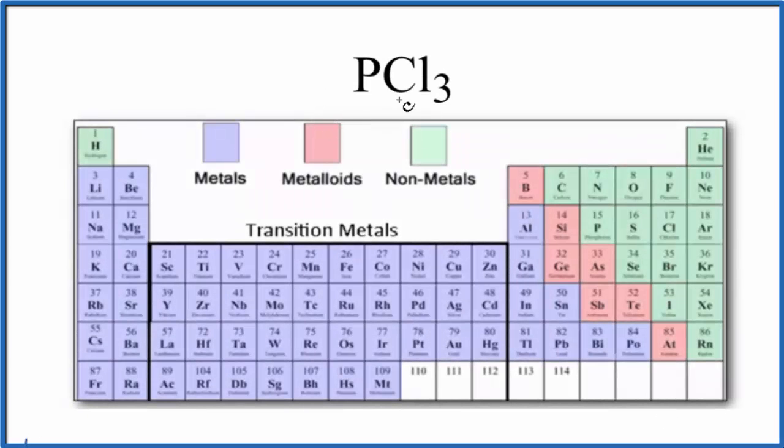The question is whether PCl3 is ionic or covalent. This is phosphorus trichloride. So we have our periodic table here.